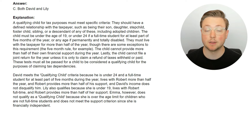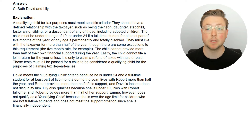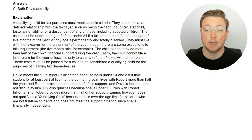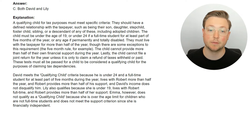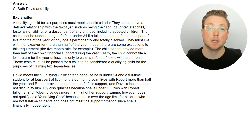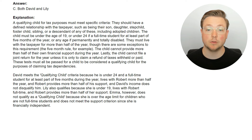The answer is both David and Lily, so let's learn why. A qualifying child for tax purposes must meet specific criteria — these are extra criteria on top of what we learned before. They should have a defined relationship with the taxpayer, such as being their son, daughter, stepchild, foster child, sibling, or descendant of any of these, including adopted children. Basically they have to be your child, stepchild, adopted child, or even a grandchild of one of the above.